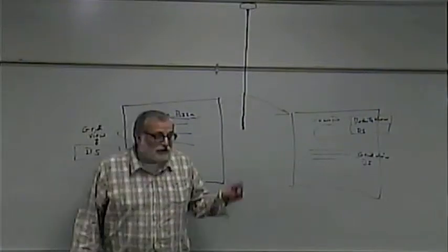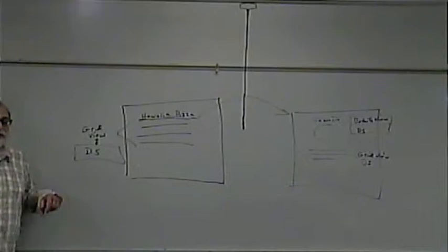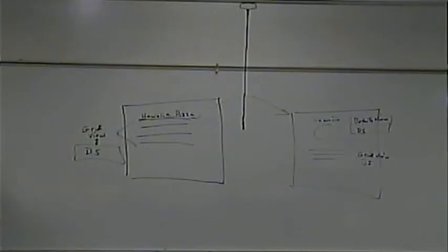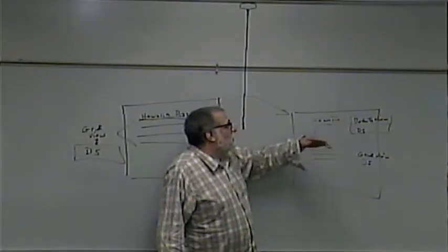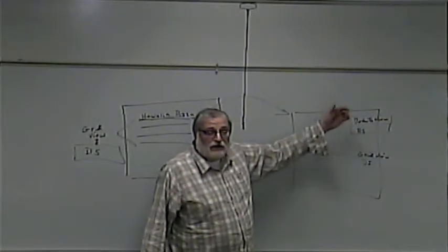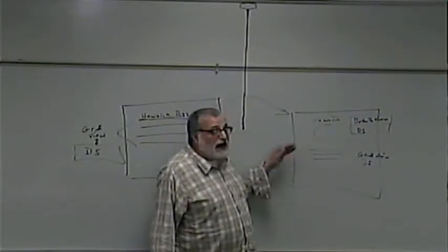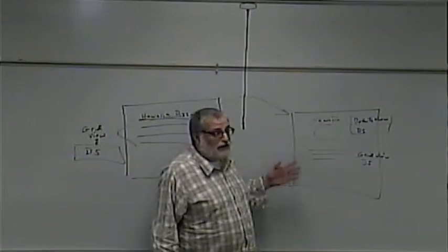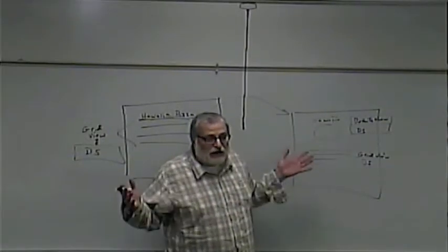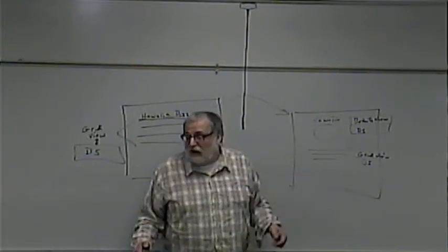So, two data sources. Because when we verbally describe what data is going to be in them, it turns out to be different. One is going to be information about the pizza — name, image, the one selected pizza. The other is going to be a list of toppings that belong to that pizza. Already, that's two different things.